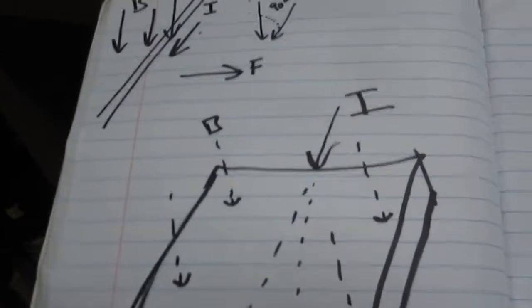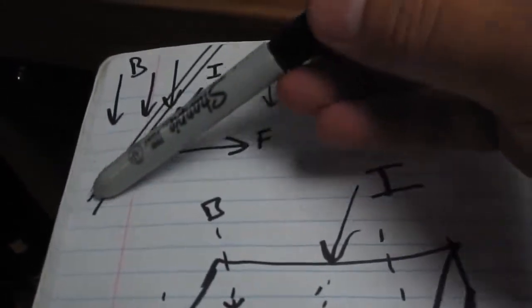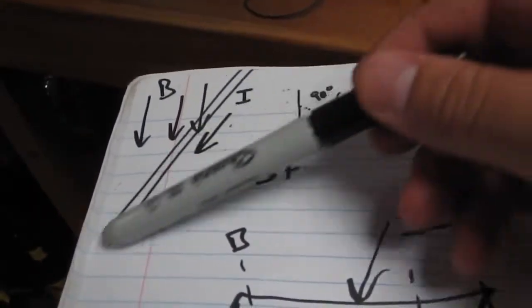So this is a quick diagram I drew up of how it actually works. In any wire, even the ones running through your house to your computer right now, there's a current flowing electrons.